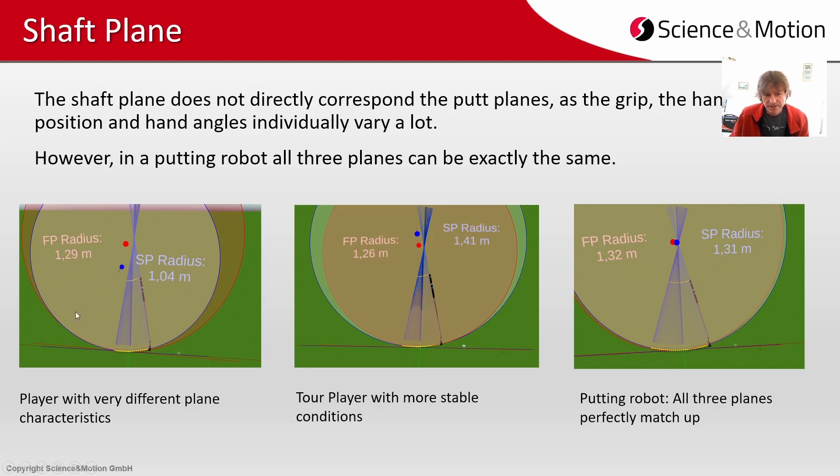In contrast you see a player with very different plane characteristics. The radius varies a lot and the center is at different positions. In the middle you see a tour player with a more stable condition of the putt planes.